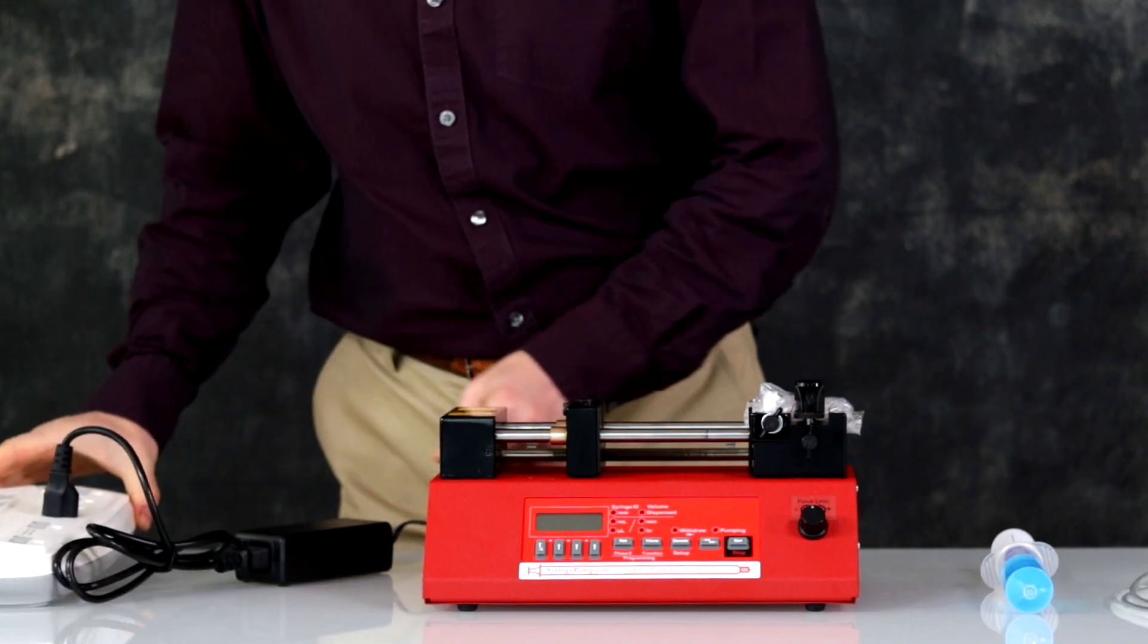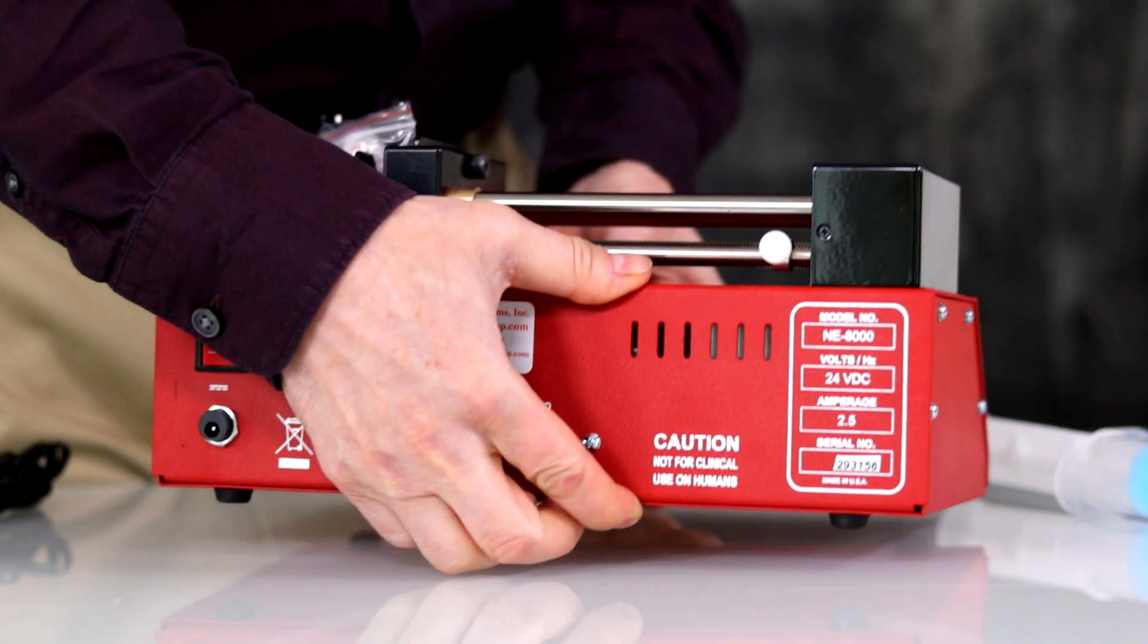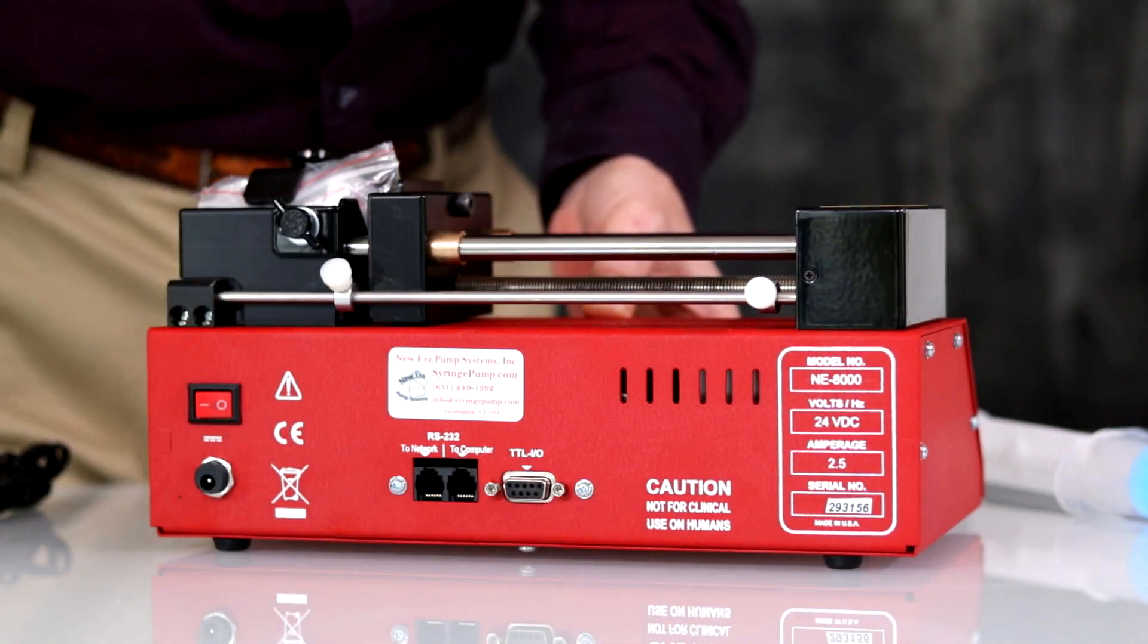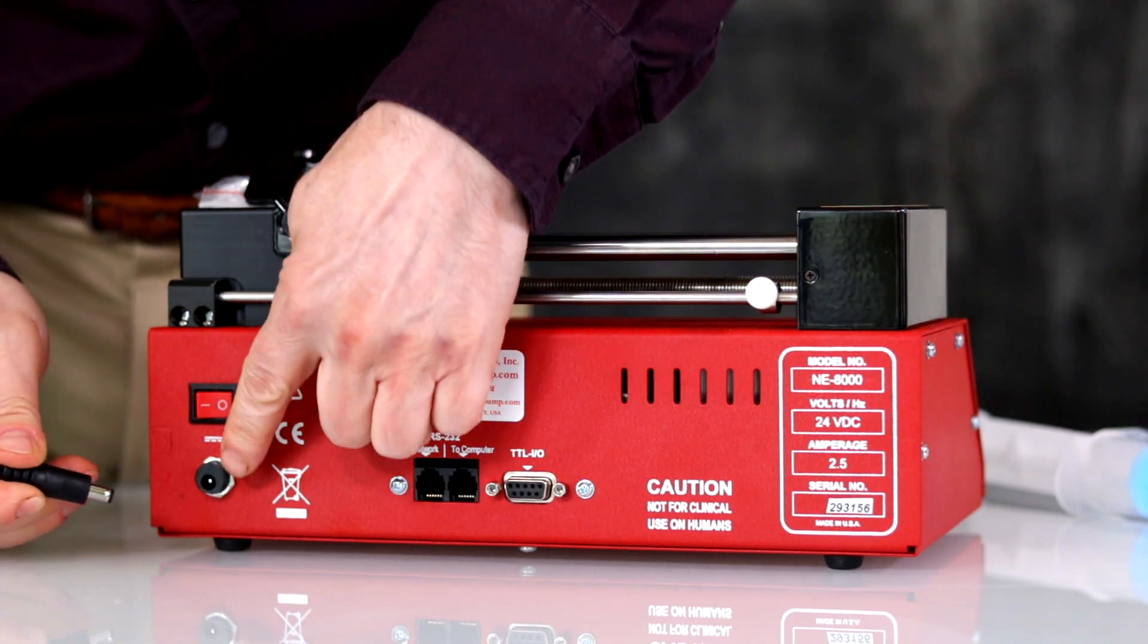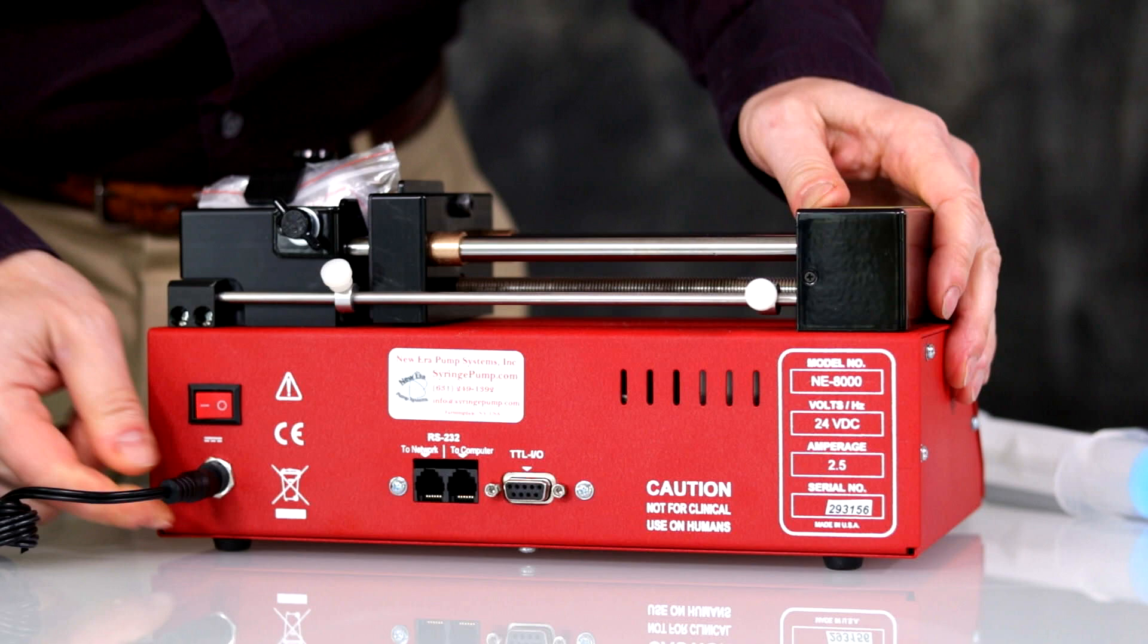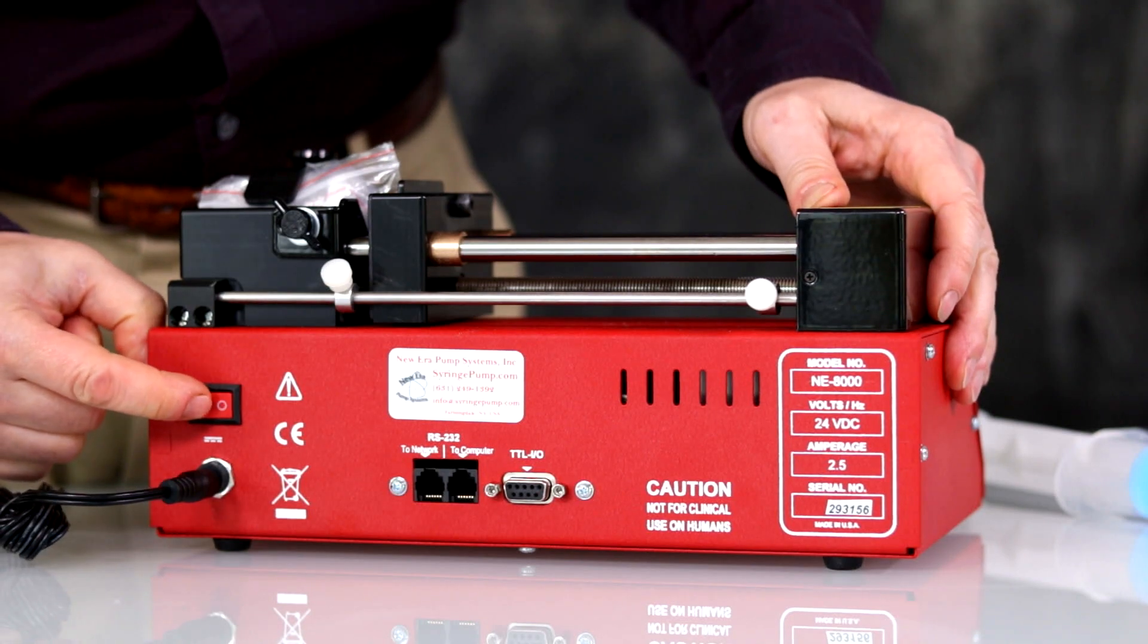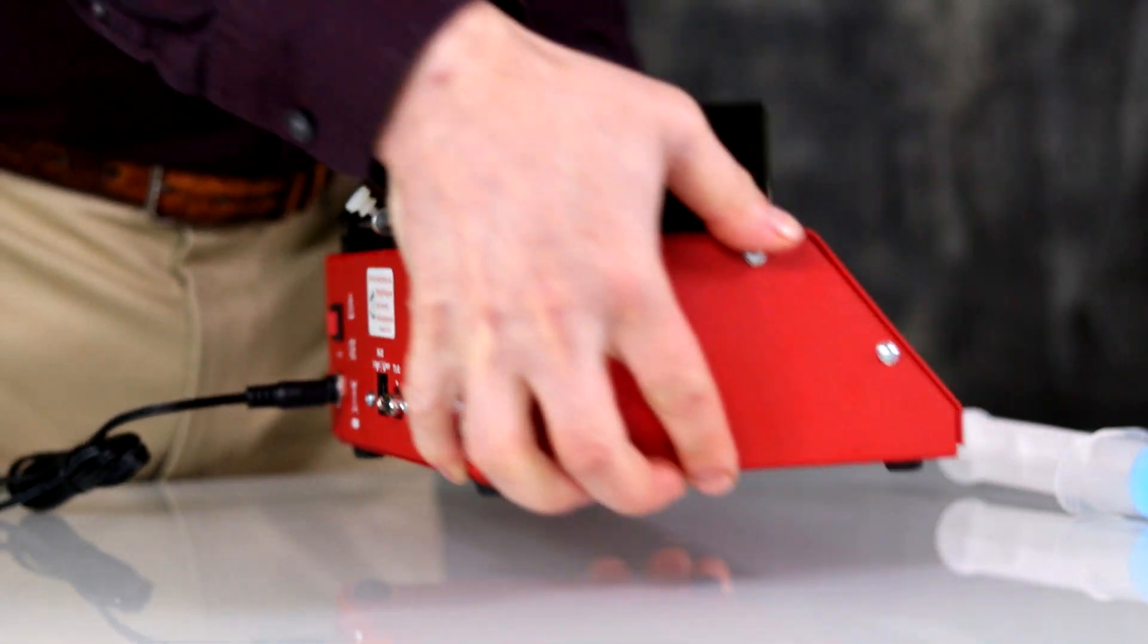Plug your power supply into the back of the pump using the round connector, then turn on the pump by pressing the switch. You will hear a beep indicating the pump's power is turned on.